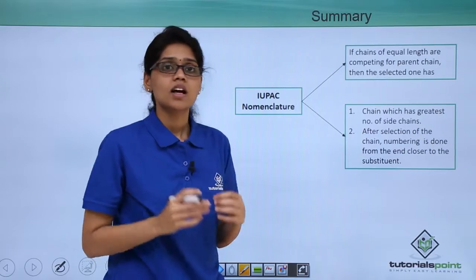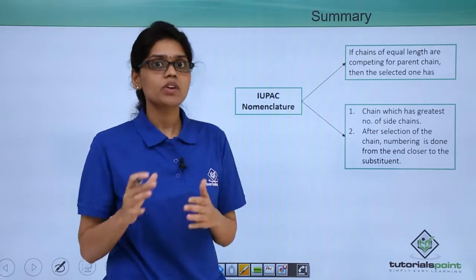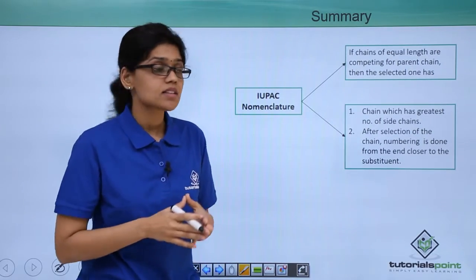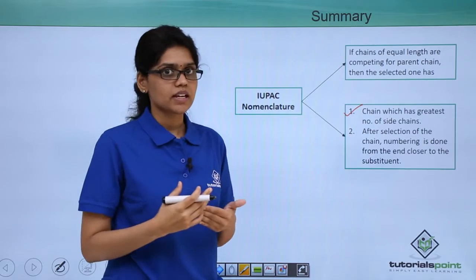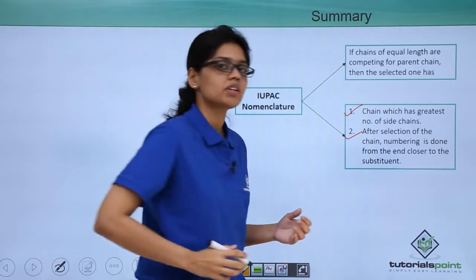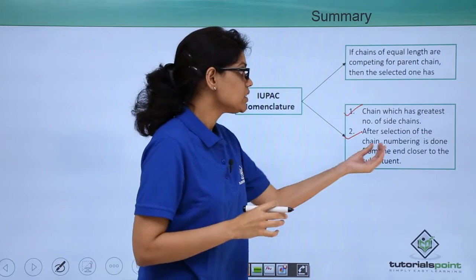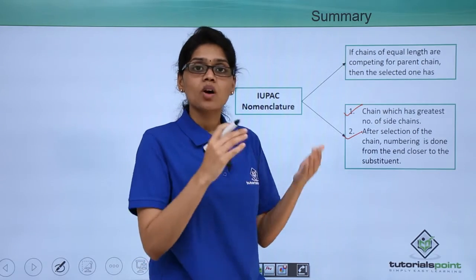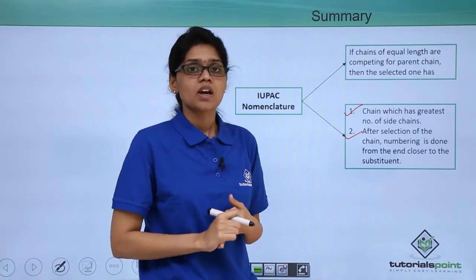In another case, we have seen that if two or more chains are competing for equal position, or equally competing for the parent chain, priority will be given to that chain which has the greatest number of side chains or more branching. After selection of that particular chain, numbering is done from the end closer to the substituent or from where the branching actually takes place, and not from the other side.